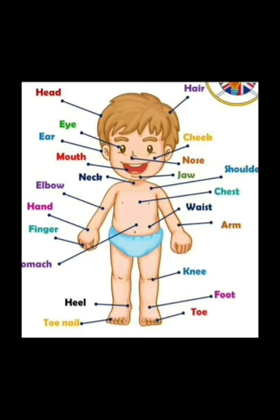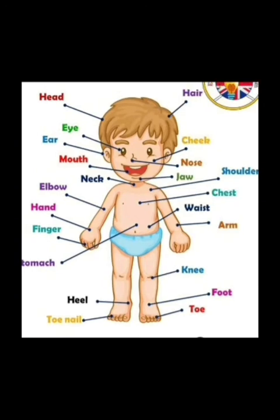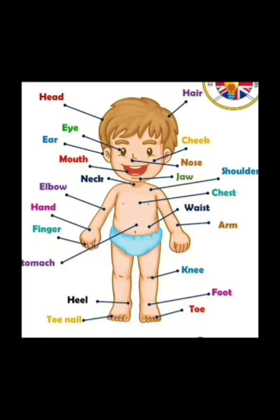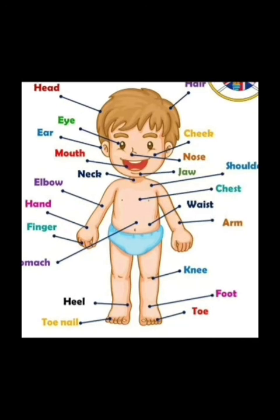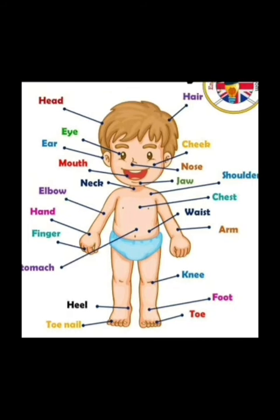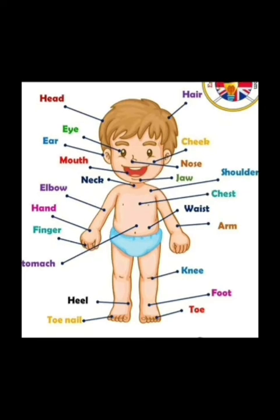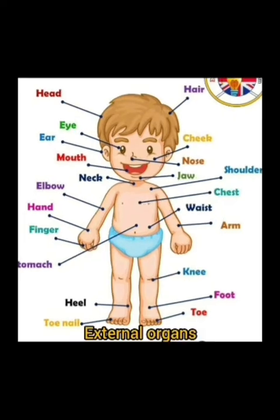Organs that are on the outside of our body are called external organs. Legs, arms, ears and nose are our organs. They are on the outside of our body. Hence, they are our external organs.